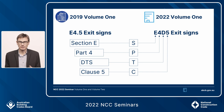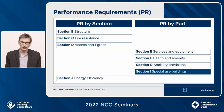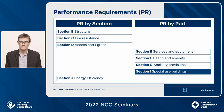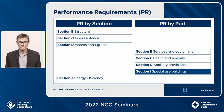There's a trick that depends on where the performance requirements are. Sometimes in Volume 1, the performance requirements are at the beginning of the section, and sometimes at the beginning of the part. For example, in Section C, the performance requirements are at the beginning of the section — there are three parts: C1 fire resistance, C2 compartmentation, C3 protection of openings — and they're all related to the same fire-related performance requirements. But consider Section F, health and amenity: F2 has toilet provisions and F5 has noise attenuation — different subject areas with different performance requirements found at the beginning of each part.